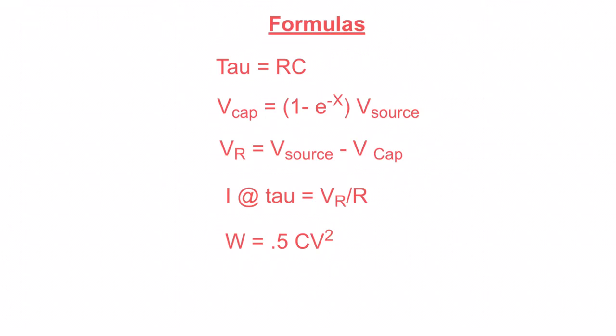Then we get this formula here. This 1 minus e to the negative x times V source, and this is important, equals your capacitor voltage, not your resistor voltage. You're going to want to use that as your resistor voltage. Don't do it. It's your capacitor voltage. So 1 minus e to the x, that minus x sign, that is your time constant.